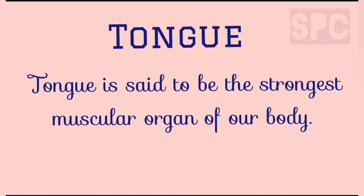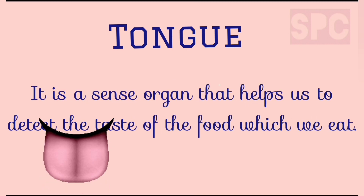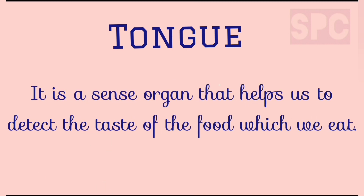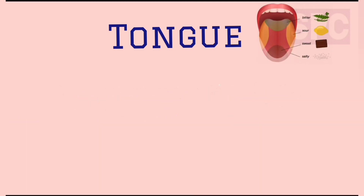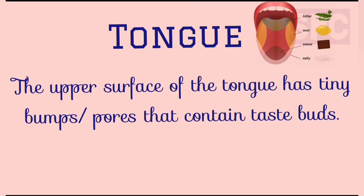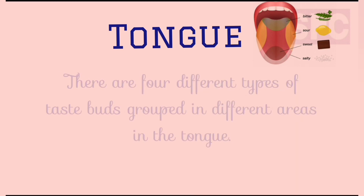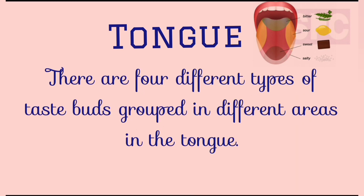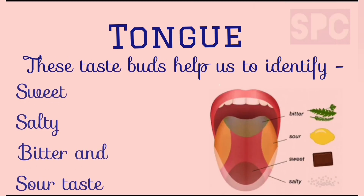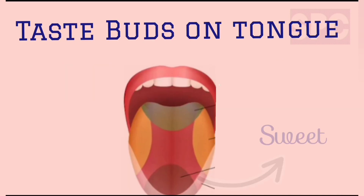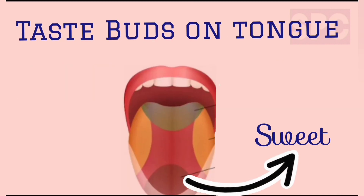The tongue is said to be the strongest muscular organ of our body. It is a sense organ that helps us detect the taste of food. The upper surface of the tongue has tiny bumps or pores that contain taste buds. There are four different types of taste buds grouped in different areas of the tongue, helping us to identify sweet, salty, bitter, and sour tastes.